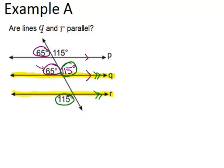So yes, line Q is parallel to line R. I could also say that line P is parallel to line R or line P is parallel to line Q. Basically, all three lines are parallel.